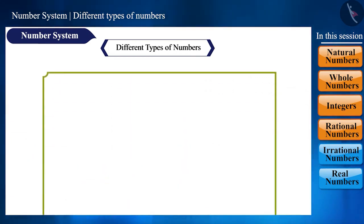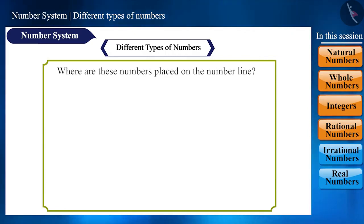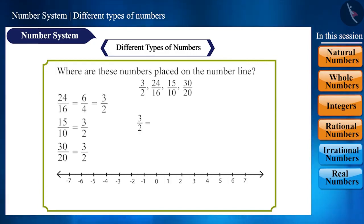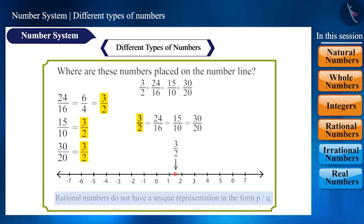Friends, can you tell me, where will all these different numbers, 3 by 2, 24 by 16, 15 by 10, 30 by 20, be placed on the number line? Even though these numbers are different, their value remains 3 by 2, which will be located here on the number line. That is, we can say that rational numbers do not have a unique representation in the form P by Q.